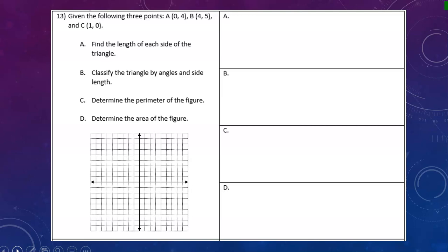First, I'm going to plot my points on the blank graph at the bottom. I'm plotting A at (0, 4), B at (4, 5), and C at (1, 0). So here's my triangle.